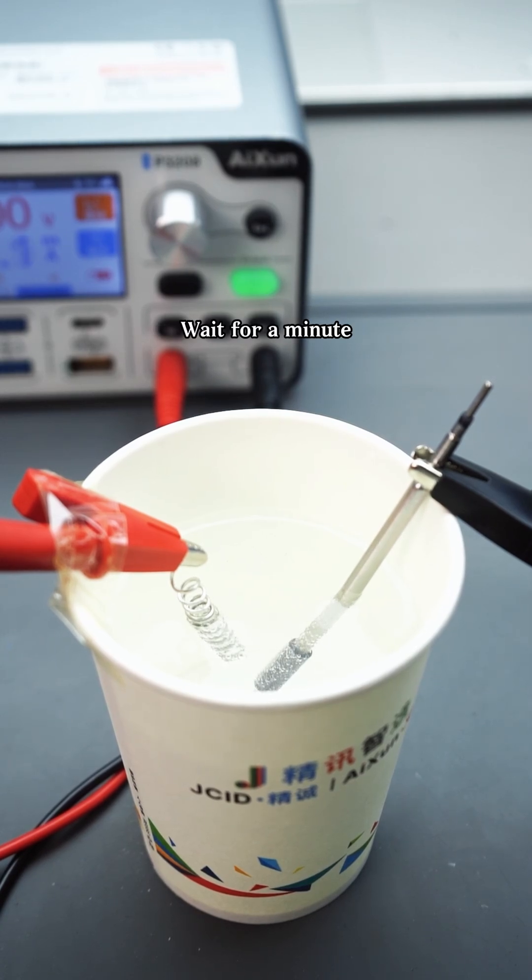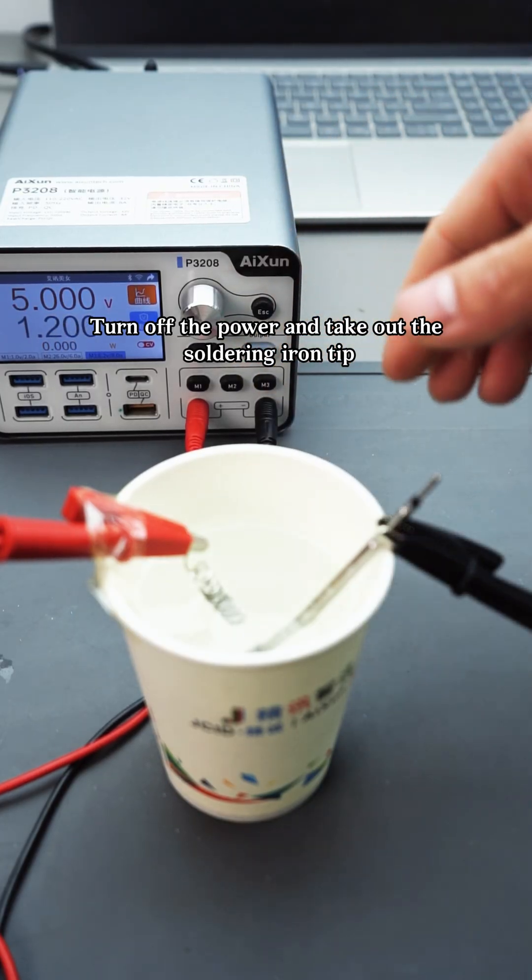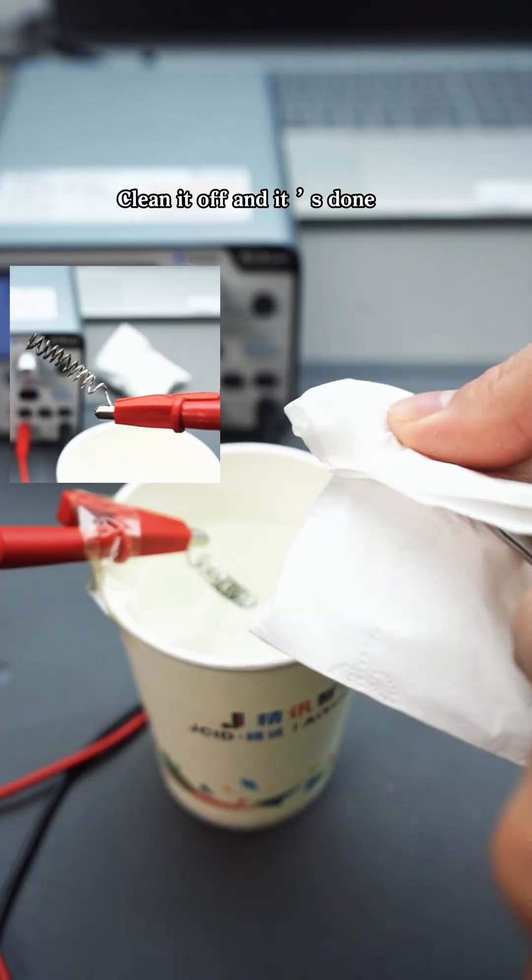Wait for a minute. Turn off the power and take out the soldering iron tip. Clean it off and it's done.